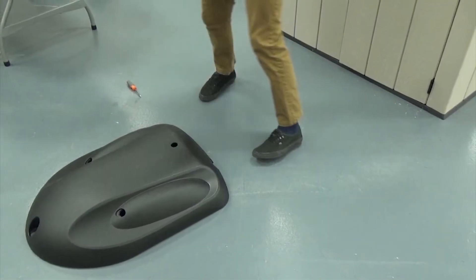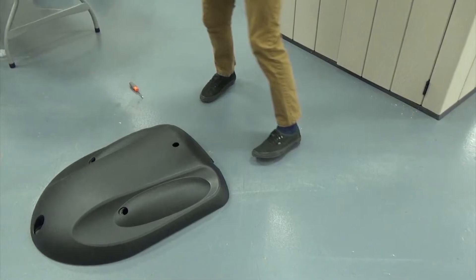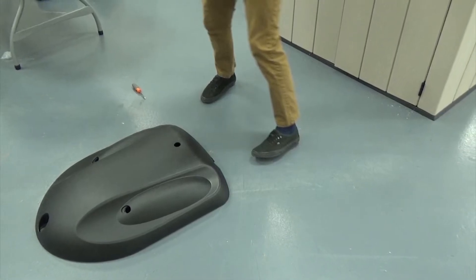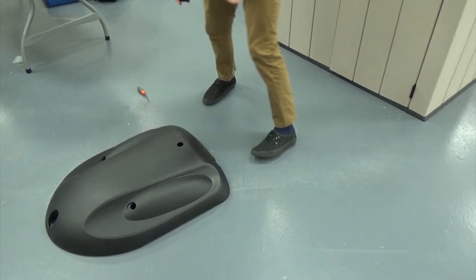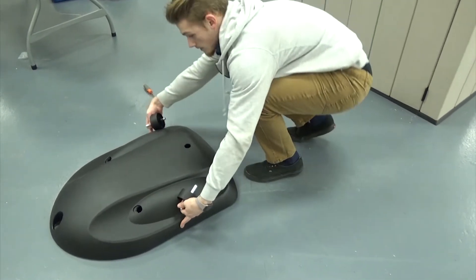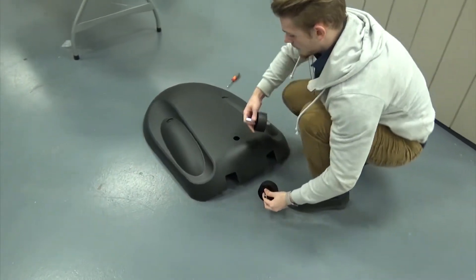In this instructional video we will be assembling the pole to the base of a Lifetime Youth Basketball System. Your system may look different than the model shown, but the steps performed will still apply. First, slide an axle into each wheel.